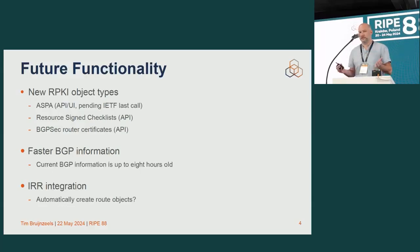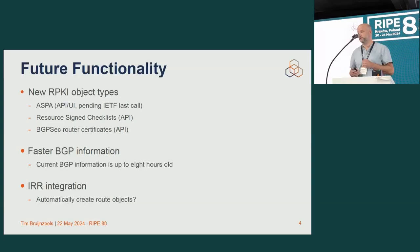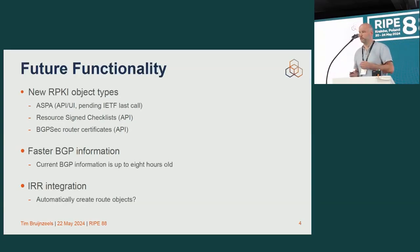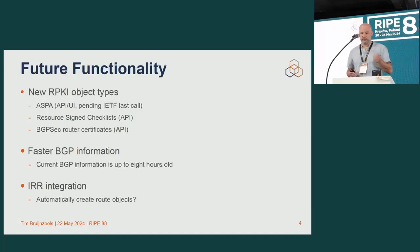As I just showed in the previous slide, we gave you information about what we see in BGP and how your ROAs would affect that. But that information can be quite old — up to eight hours old. We could look into making that feedback faster, because we have that information and we can get to it, but it's work and therefore a question of priority. We think that new object types are probably more important at this time, but if you feel differently, please let us know.